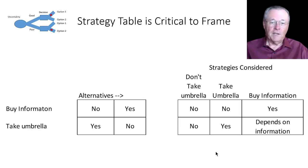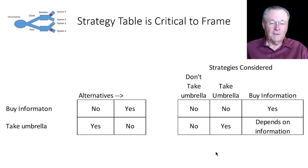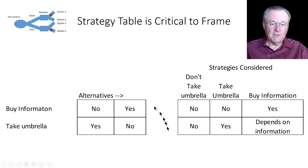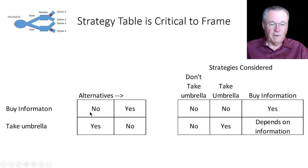So this is the strategy table, and it's really critical to framing a problem. You need to understand what you're trying to do here. The basic strategy table shows: buy information or take an umbrella — those are the decisions I need to make. The alternatives to buying information are yes or no, and take an umbrella is yes or no.